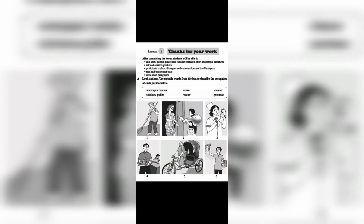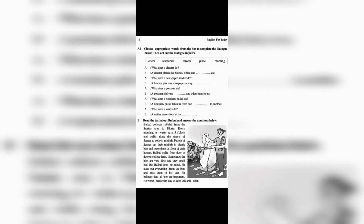Bulbul collects rubbish from the Shankar area in Dhaka. Every morning he wakes up at five o'clock and walks along the streets of Shankar to collect rubbish. People of Shankar put their rubbish in plastic bins and leave them in front of their houses. Bulbul walks from door to door to collect them. Sometimes the bins are very dirty and they smell bad.